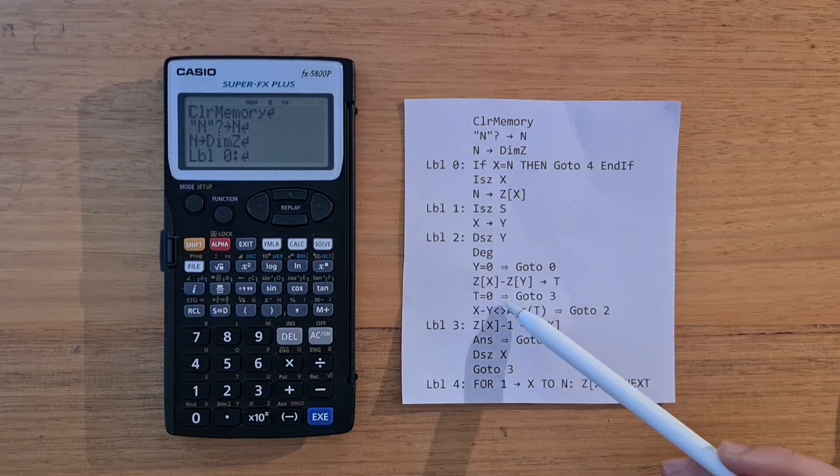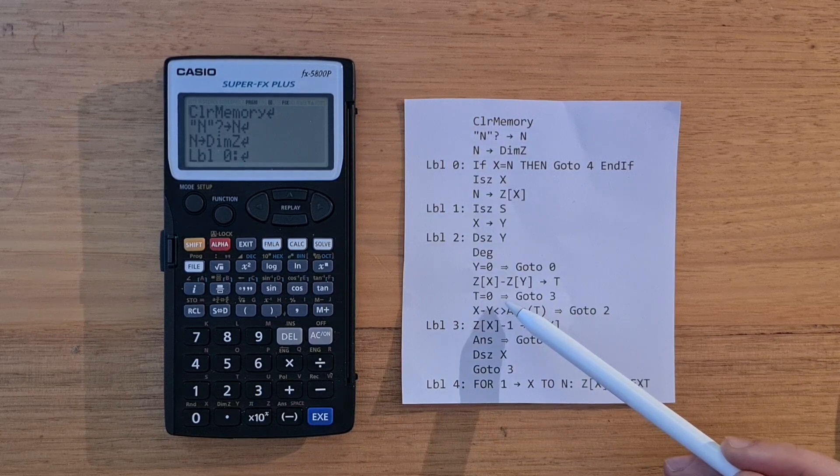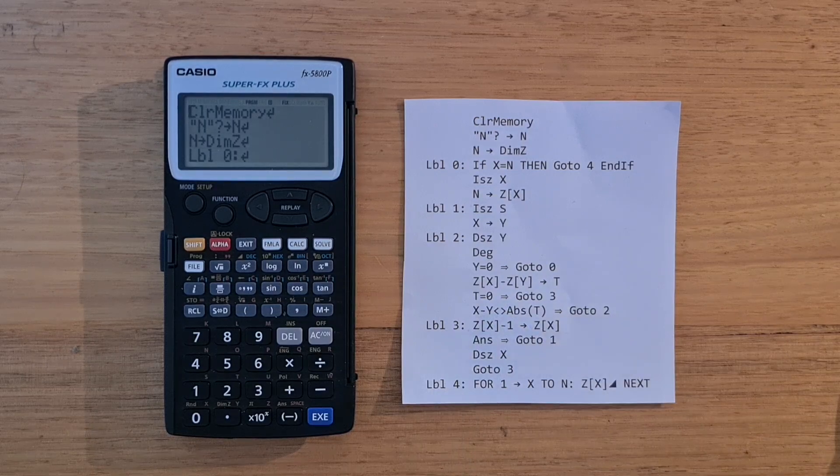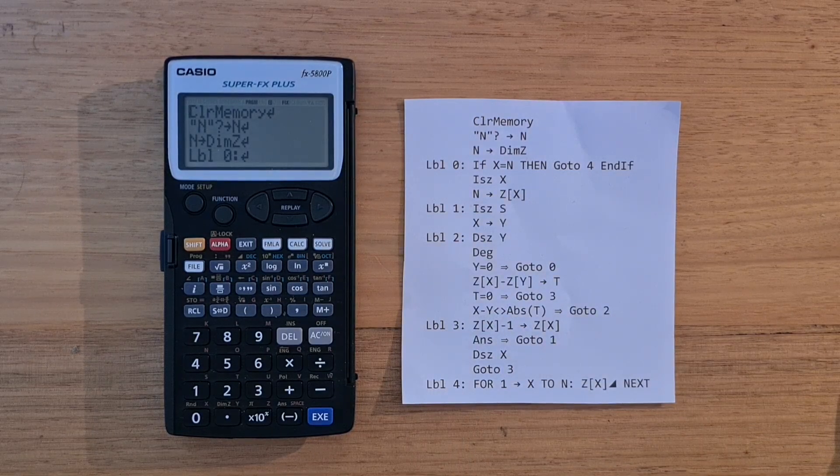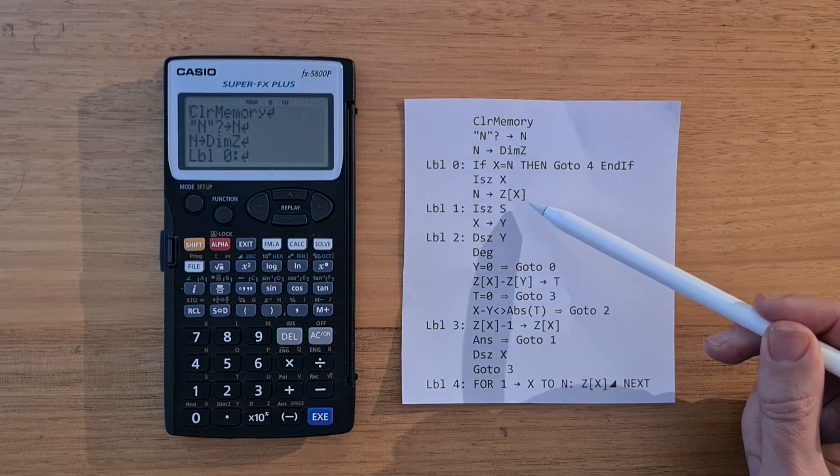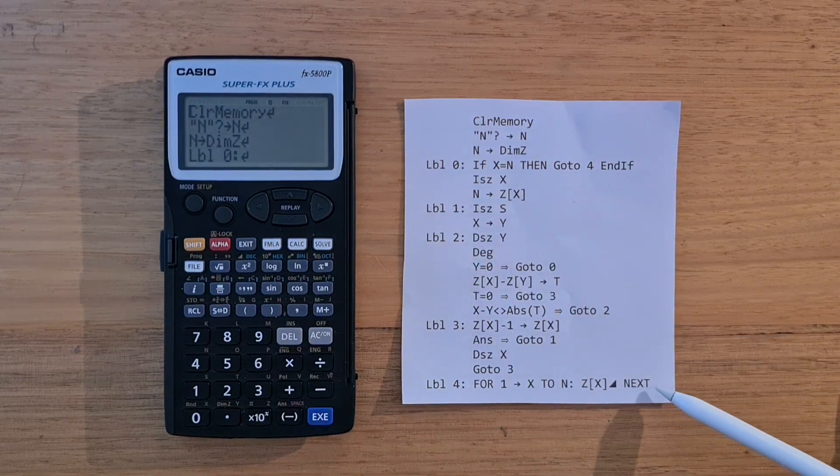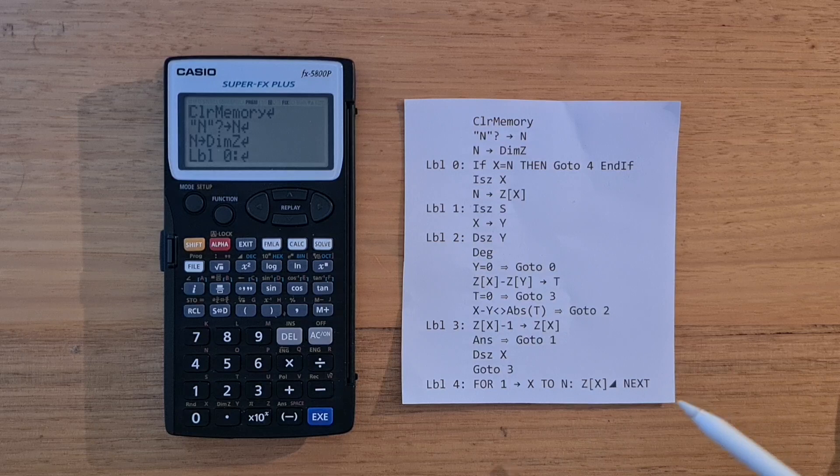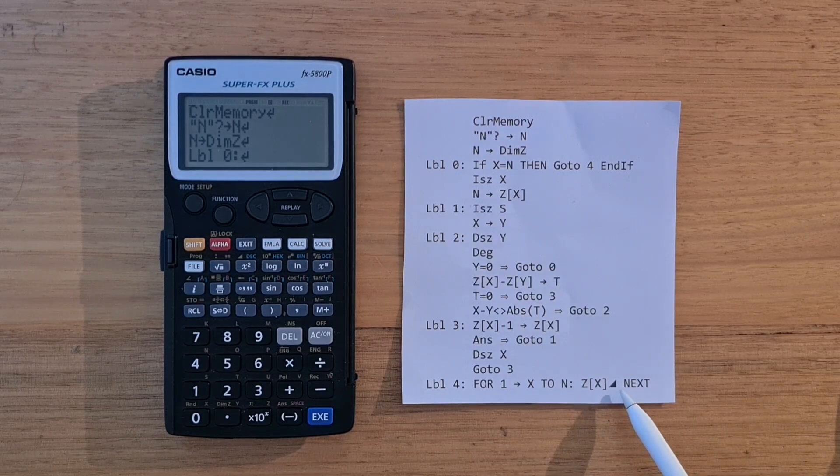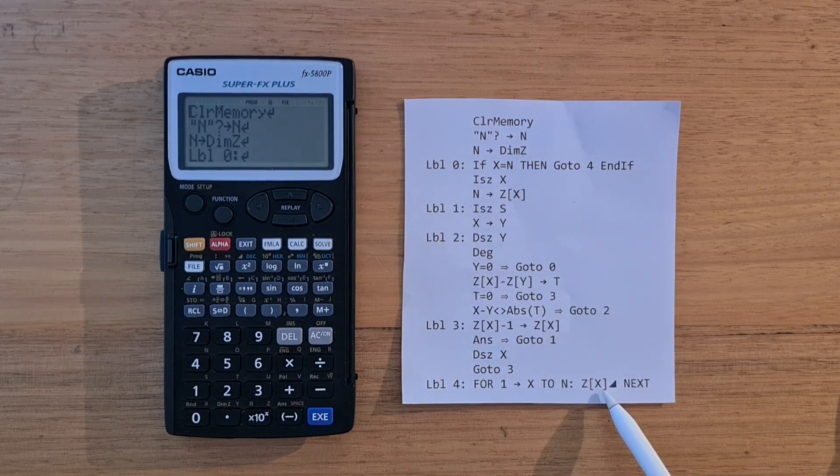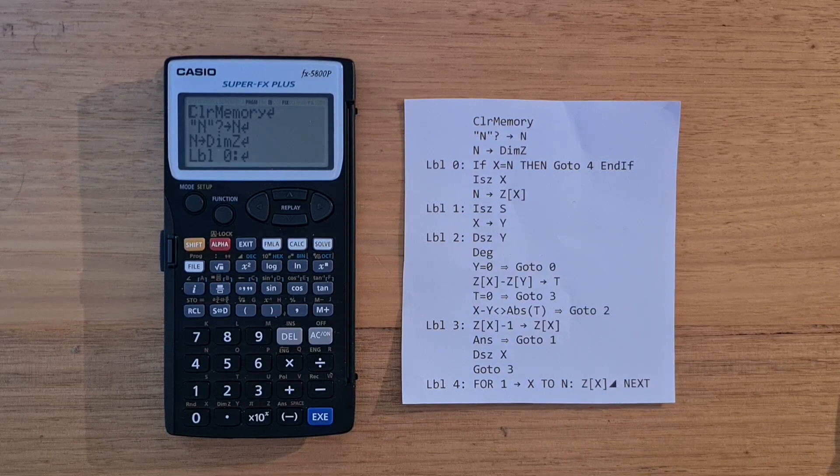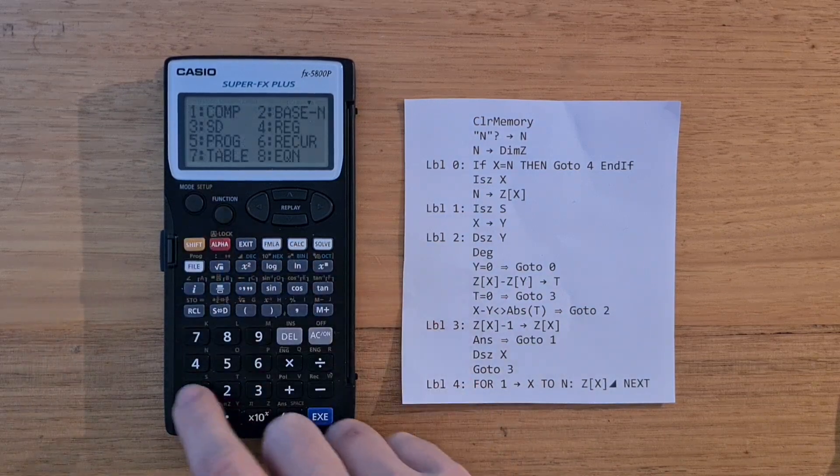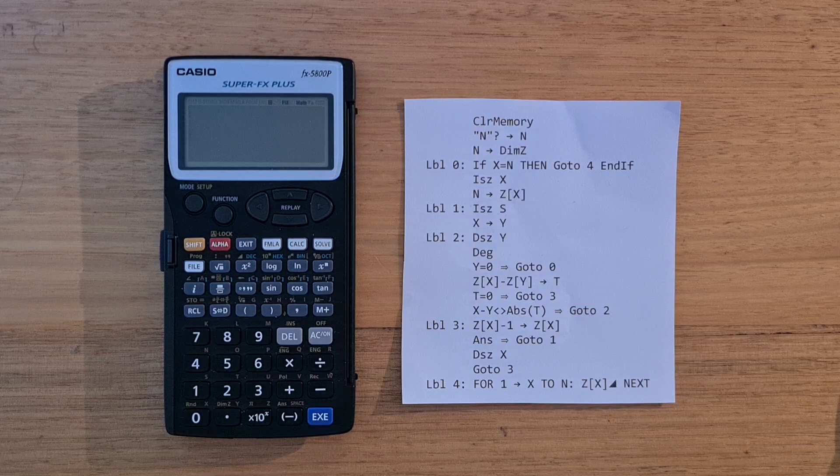And there's a compact version of if statement that uses double right arrow. And while they're not used in this program, the calculator also supports while and do while loops. There's also, of course, indirect addressing. And so the program ends with a for loop that displays the N numbers that makes up the solution. And this triangle character causes the preceding expression to be displayed on the screen.